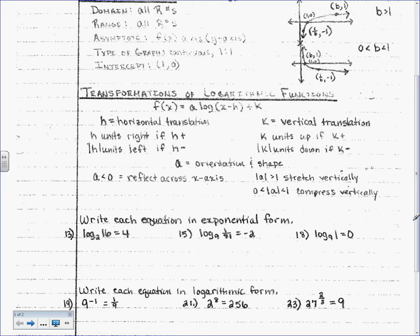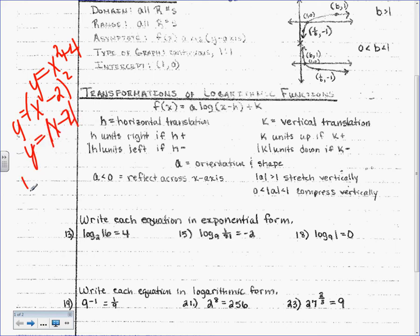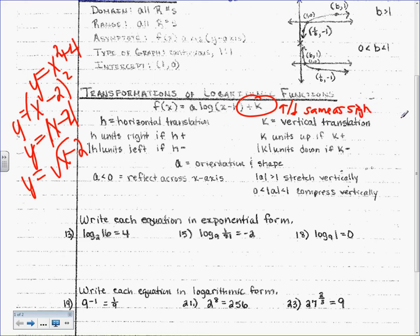Then we're going to transform them. This is not new to you. If I had y equals x squared plus 4, what shape would that be? A parabola. Where would it move from the parent? Up 4, right? If I had y equals x minus 2 squared, it moves right 2. This is the same thing for absolute values and logarithmic functions. They all have the same rules with transformations — you take your parent graph and you move it somewhere. Up or down, same as the sign.